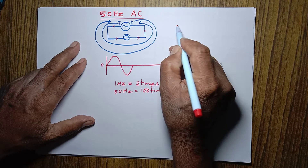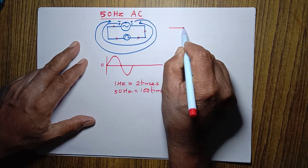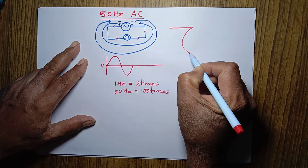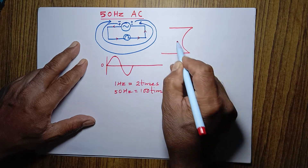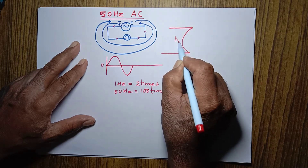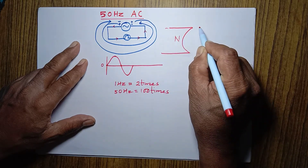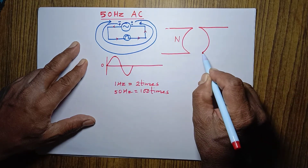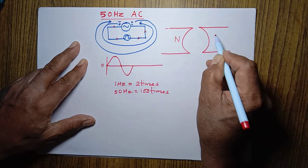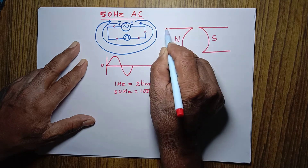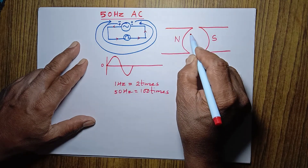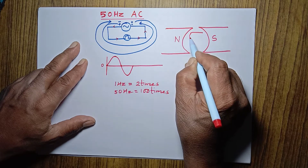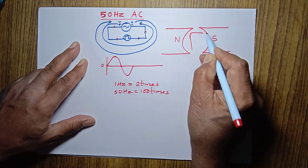This can also be understood by looking at an AC generator. In the generator, the north pole and south pole of the magnet are facing each other, and there is a coil in between them with terminals A, B, C, D.